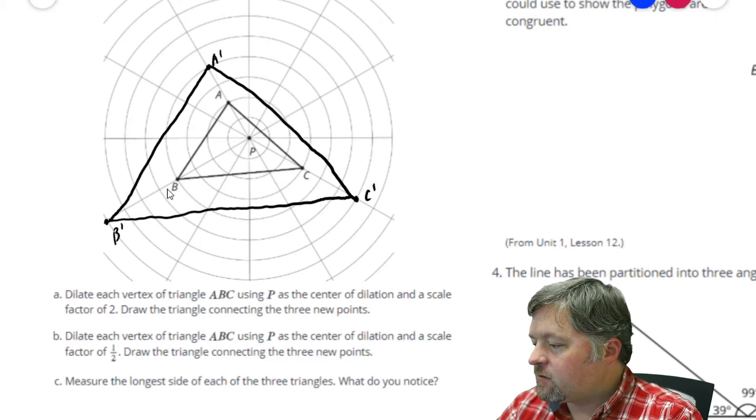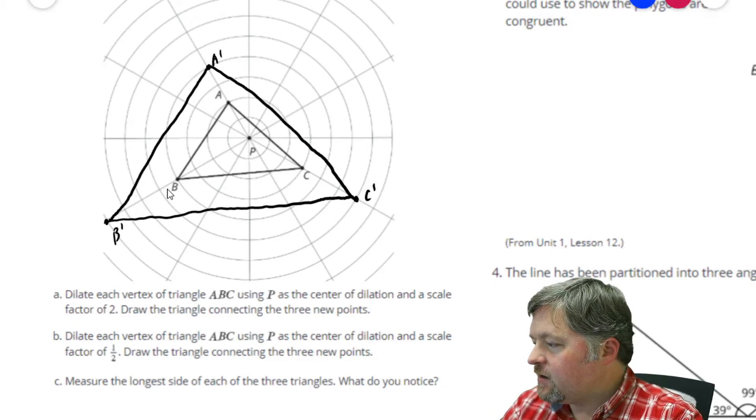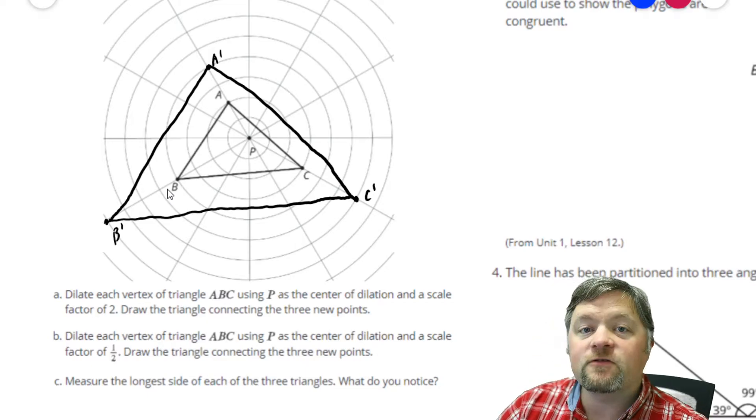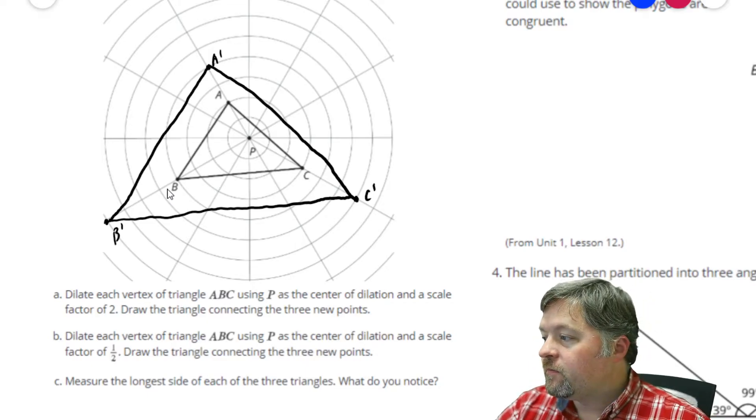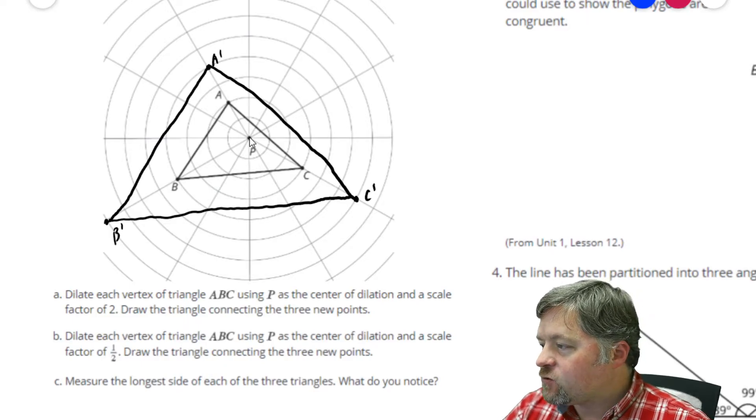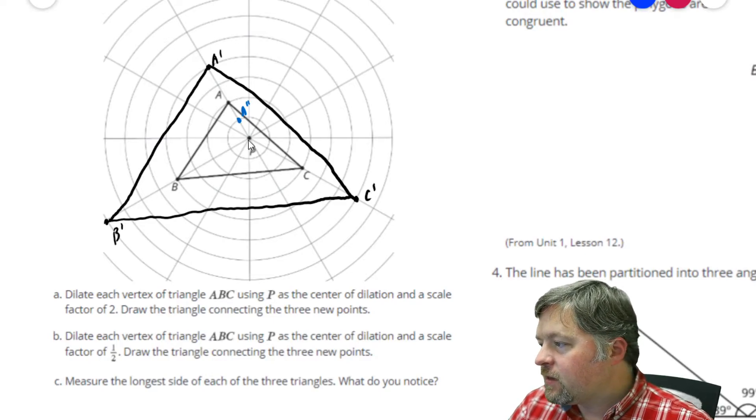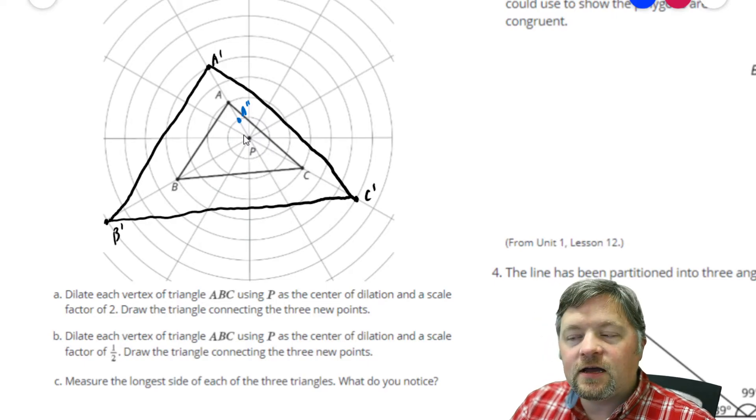Question B. We'll use a different color. Dilate each vertex of ABC using P as the center of dilation. Scale factor of 1 half. From the center of dilation to A is 2 units. 2 times 1 half is 1. Call that A double prime. C is 3 units. 3 times 1 half is 1 and a half.